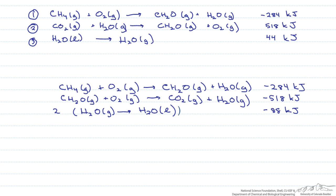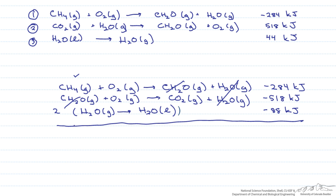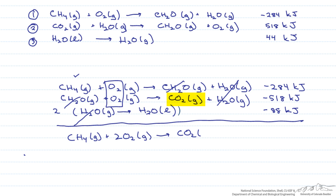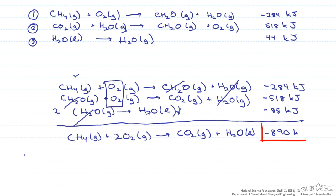Let's simplify our reactions and add up the enthalpies to get the enthalpy for the reaction of interest. We have our CH4, we get rid of our CH2O, and we get rid of our two H2O gases. When we write out the reaction, we have methane plus 2O2, and that goes to CO2 plus H2O liquid. Now we add up all these numbers, which equals minus 890 kJ. And we have our delta heat of reaction for the combustion of methane.